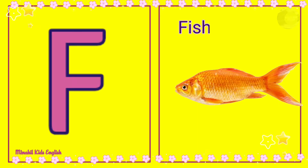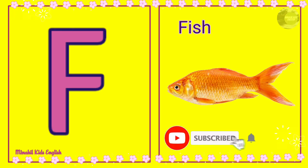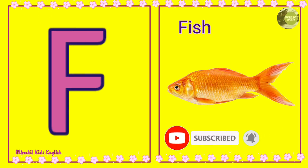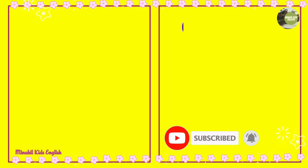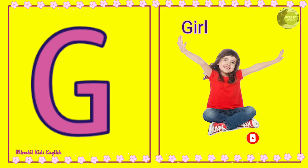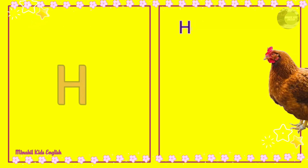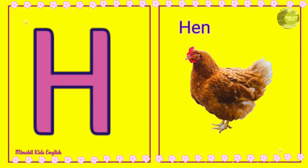F is for Fish. G is for Girl. H is for Hen.